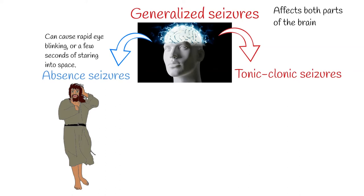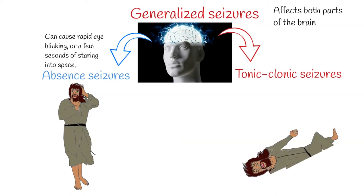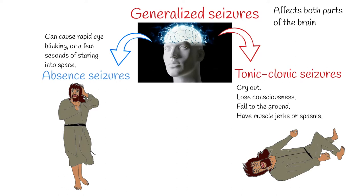A person having an absent seizure may seem confused or look like they are staring at something that isn't there. The second form of generalized seizures is tonic-clonic seizures, also called grand mal seizures. These can make a person cry out, lose consciousness, fall to the ground, and have muscle jerks or spasms. The person may feel tired after a tonic-clonic seizure.